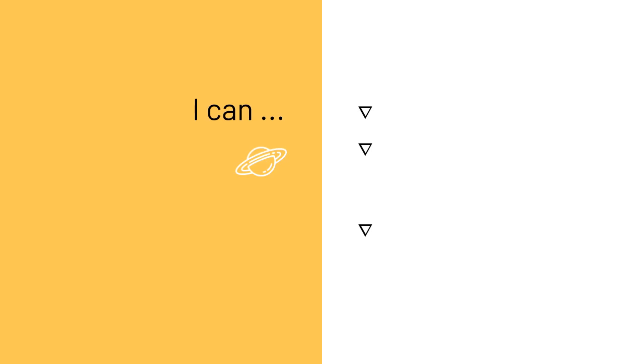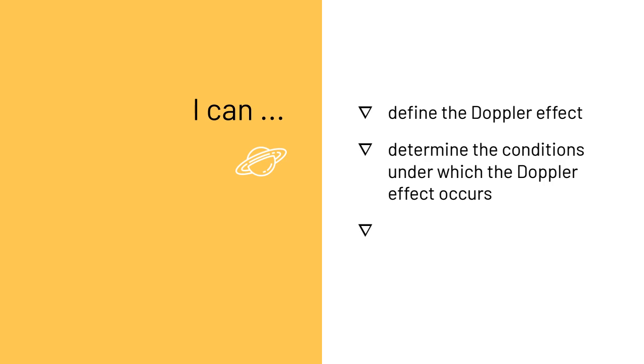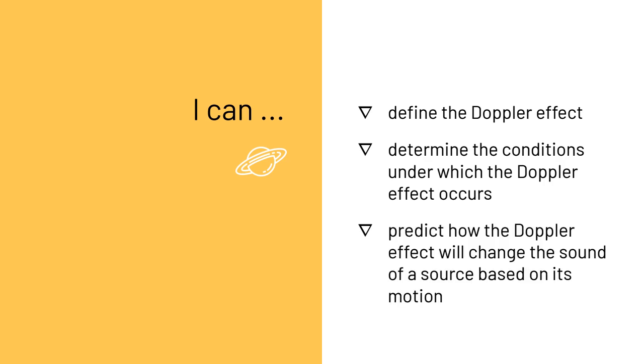The success criteria for this lesson are: I can define the Doppler Effect, I can determine the conditions under which the Doppler Effect occurs, and I can predict how the Doppler Effect will change the sound of a source based on its motion.